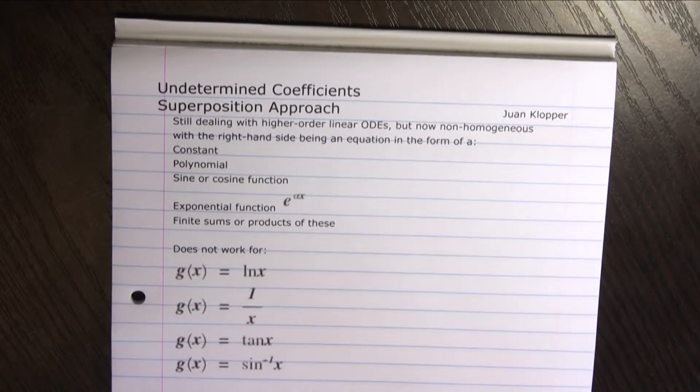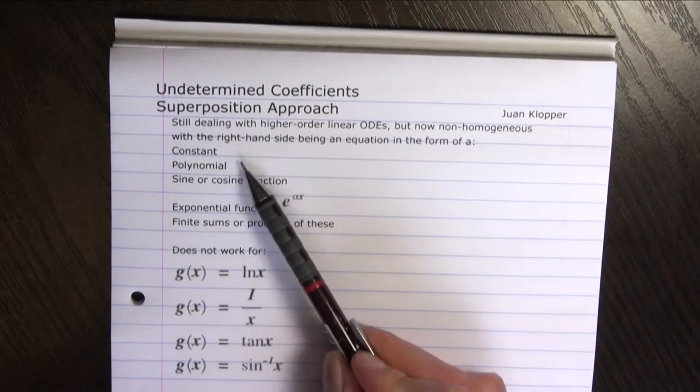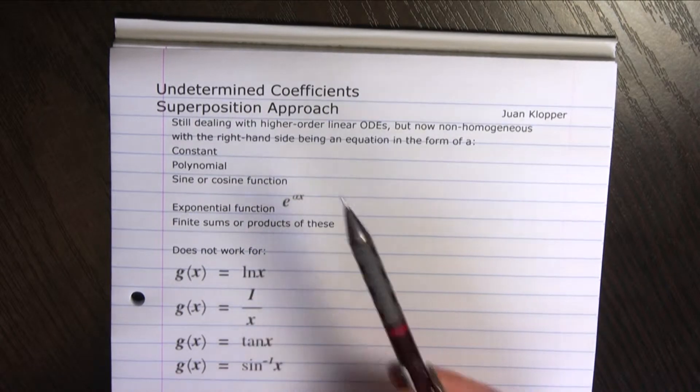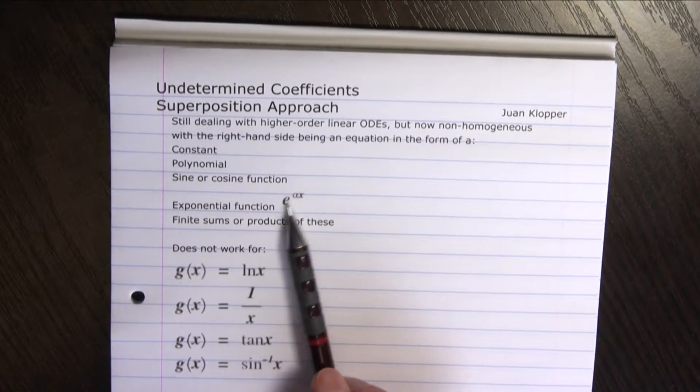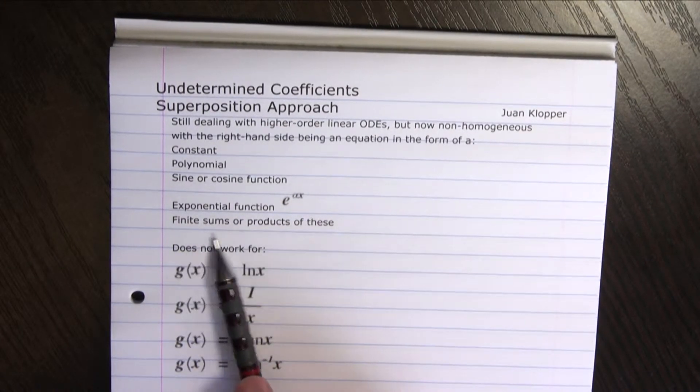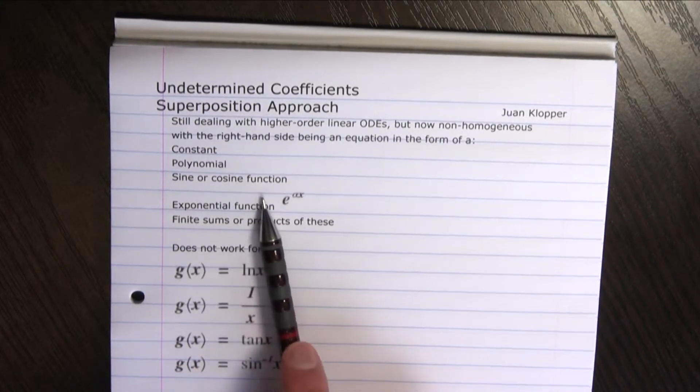So on the right hand side we're going to have an equation in various forms, either constant, a polynomial, or sine or cosine function, or an exponential function in this form, e to the power alpha x, alpha is a constant, or a finite sum or product of any of these.